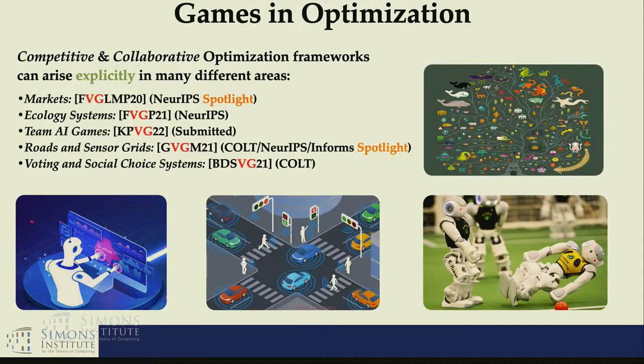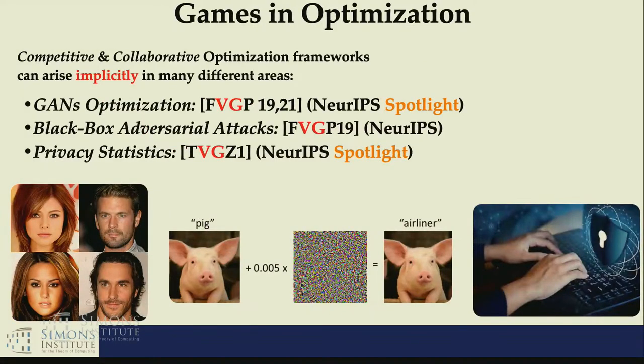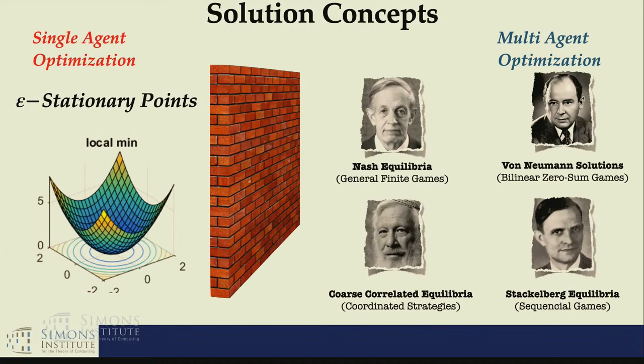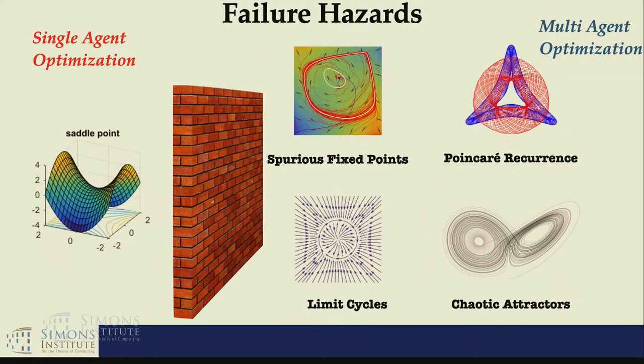In my opinion, games in optimization appear everywhere, from the markets and the players that have their own incentives and are trying to find their best outcome, to biology, team AI games right now with RoboSoccer and all that fascinating stuff. Other times we have games in optimization in an implicit way, like when we want to create robustification of our model or create a defense in an adversarial attack. With new questions came new solution concepts and new problems.